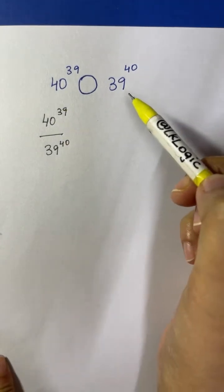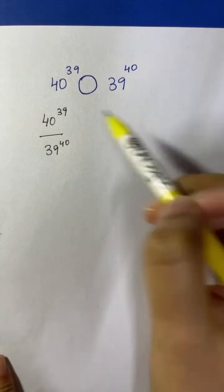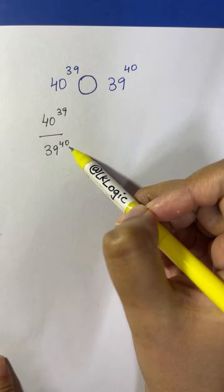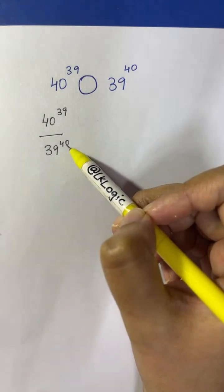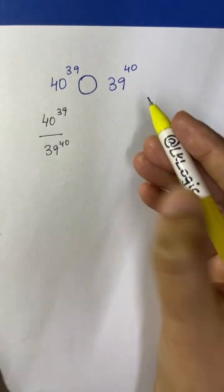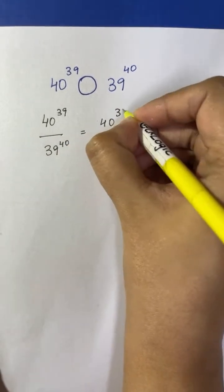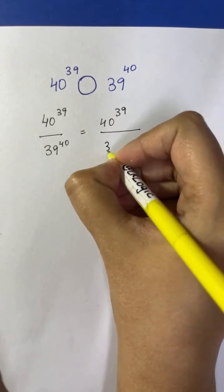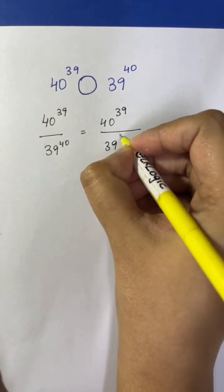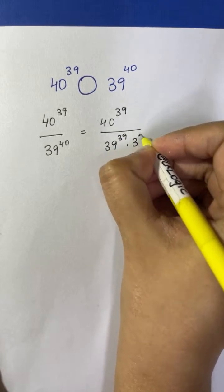But how can we do this? It's too complicated. So can you take a look at the exponents? We have 39 and we have 40. We can turn this exponent 40 into 39 by writing it like this: 40 to the power of 39 over 39 to the power of 39 times 39.